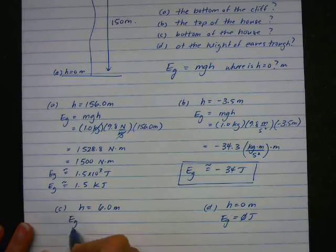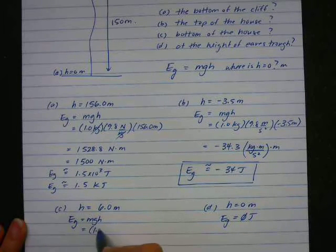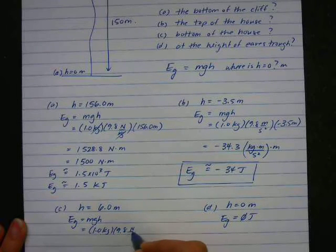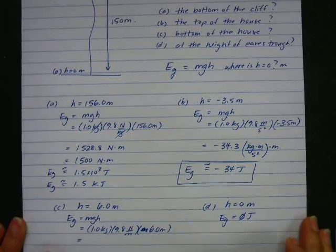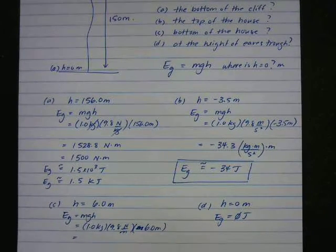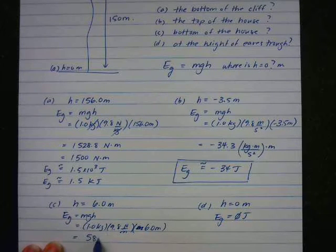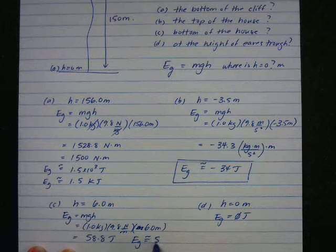Same thing. E_g equals mgh. 1 kilogram, 9.8 newtons per meter. And the height is 6 meters. I'm going to go ahead and fill this out. 9.8 times 6. I get 58.8, and that's joules. We're going to round that. E_g is approximately equal to 59 joules.